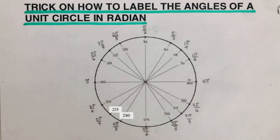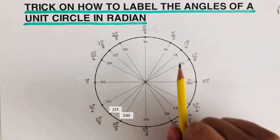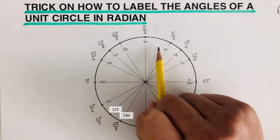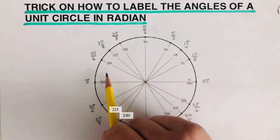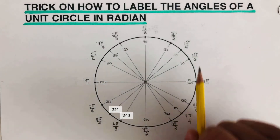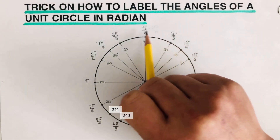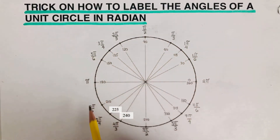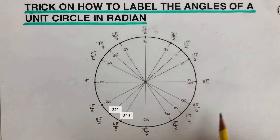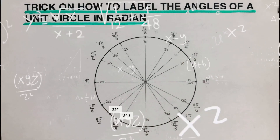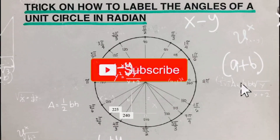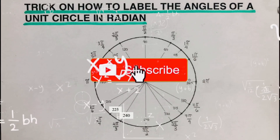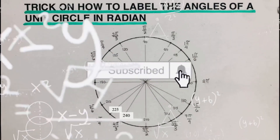So that's the trick on how to label the unit circle in terms of radian. The inner angles are in degrees and the outer ones are in radian. That's it! If you find this video helpful, hit like and subscribe for more math videos. See ya!